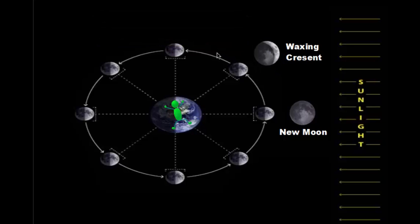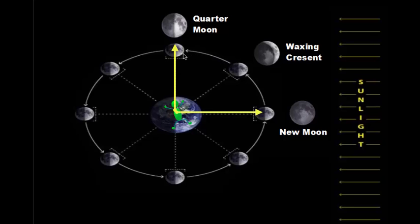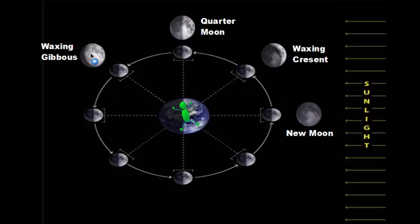Then the moon continues to revolve and you see the right half lit up and the left half in shadow. This isn't called a half moon — it's actually called the quarter moon, or first quarter, because in its revolution around the earth it's one quarter of the way through. As it continues, you'll see a lot more lit-up parts and less dark side — this is the waxing gibbous phase. Then as we go from waxing gibbous, where there's light on the right and a little less shadow, we reach the next position.